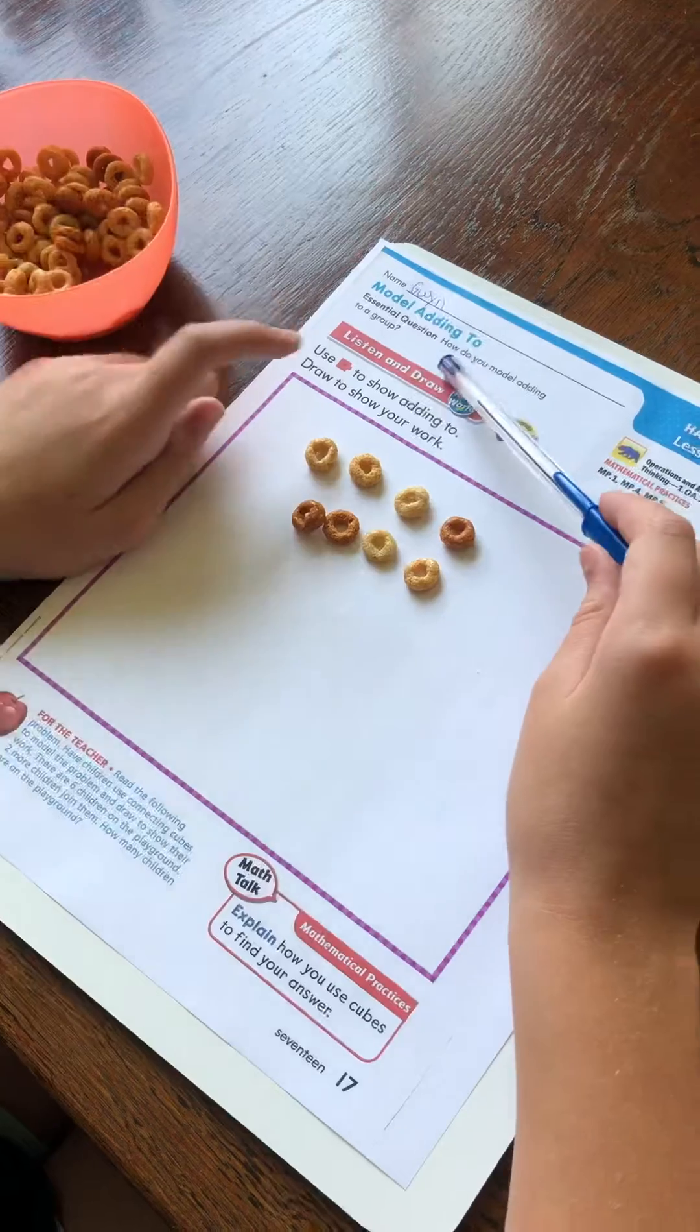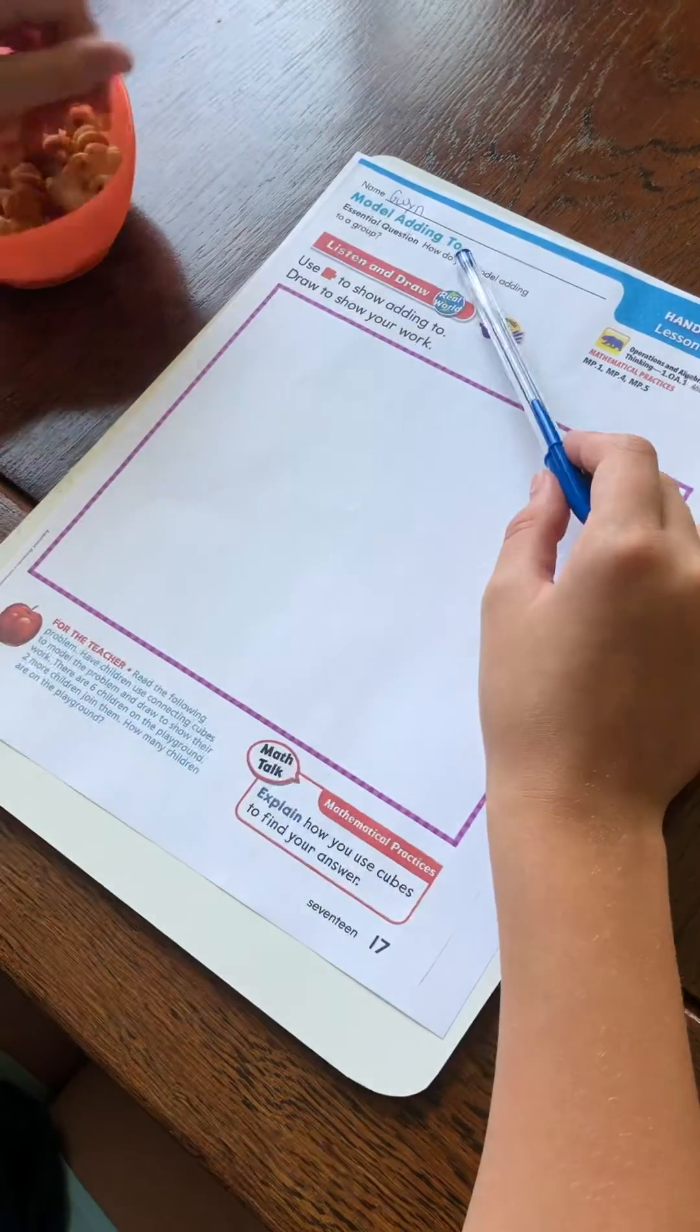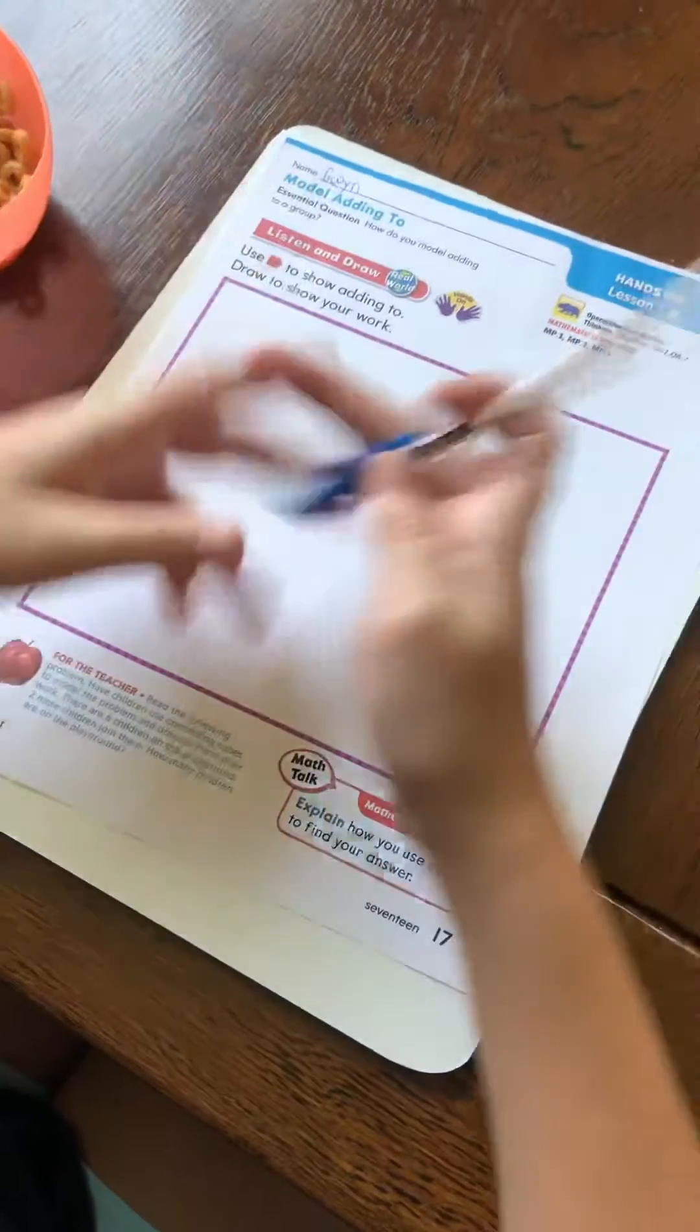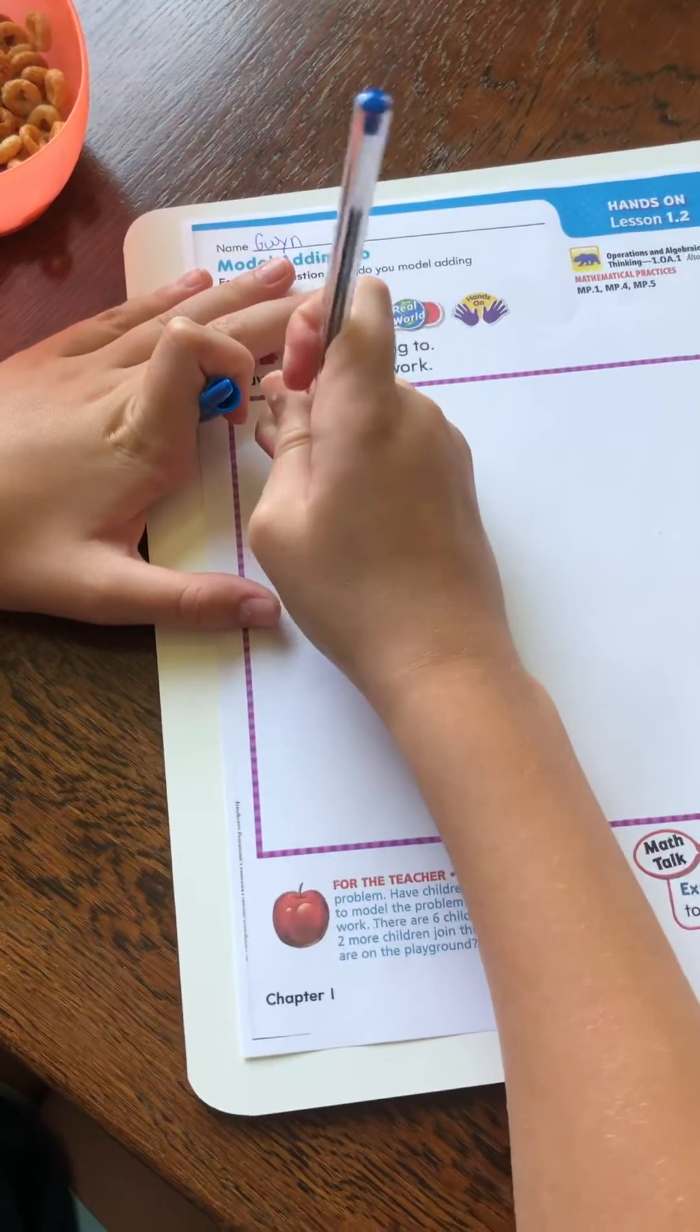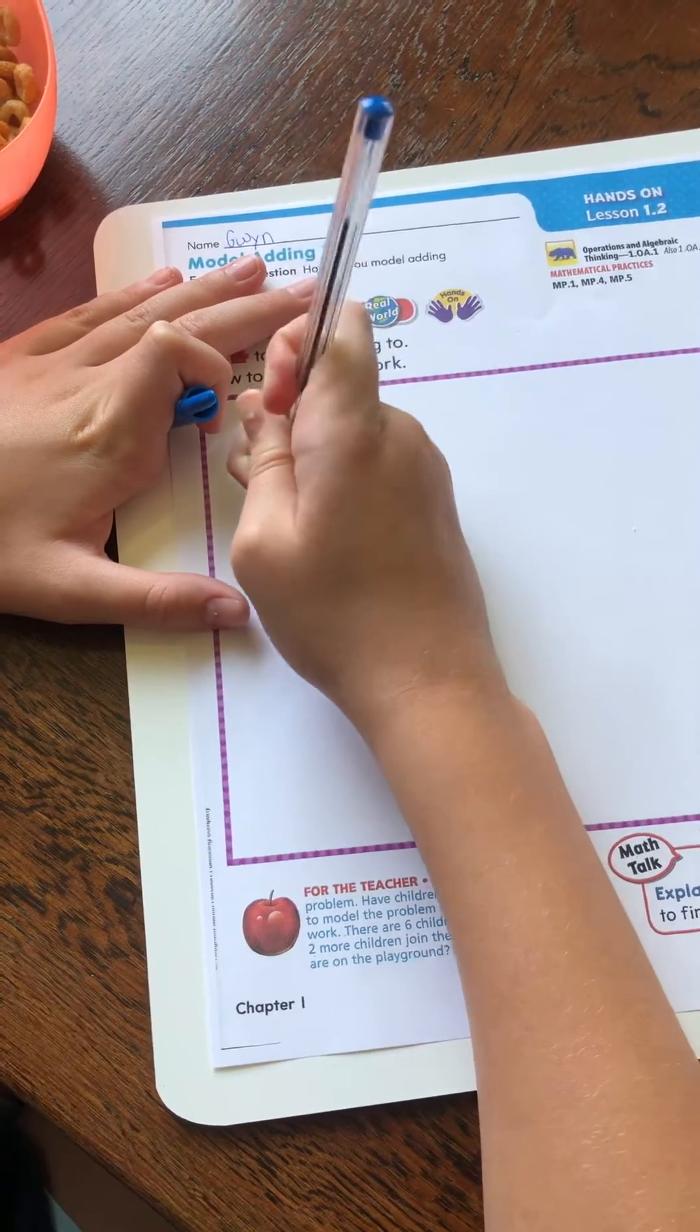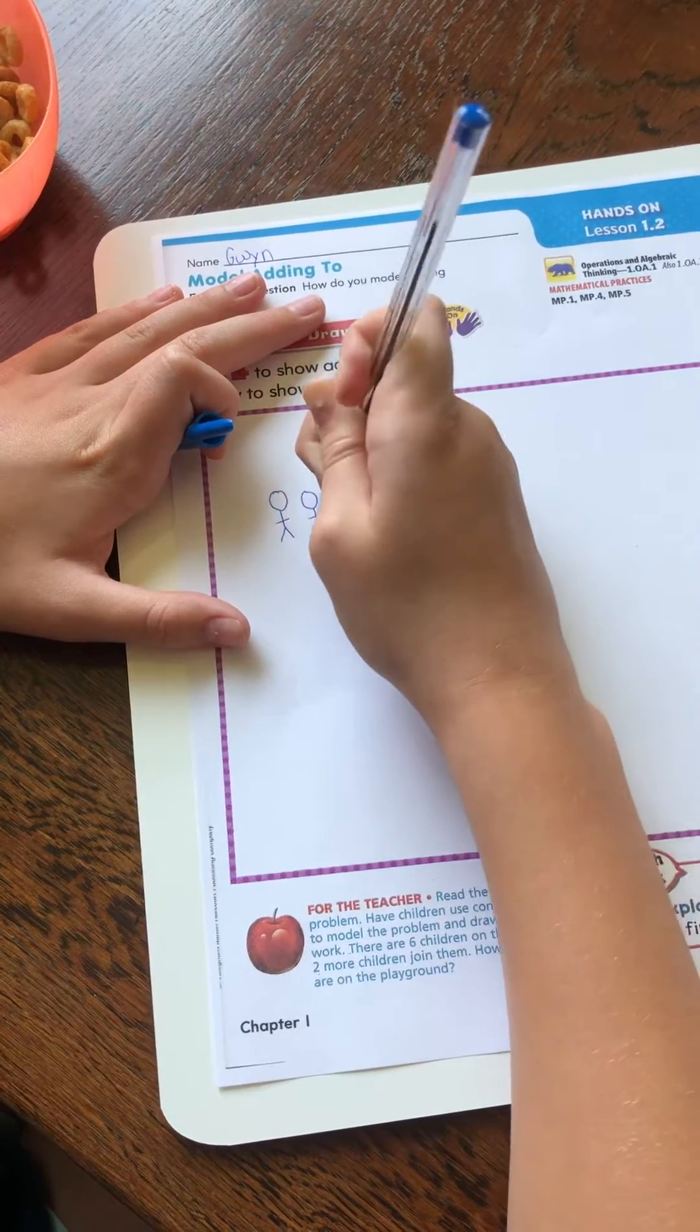And draw my six people plus two people. So here's one, two, three, four, five, six people.